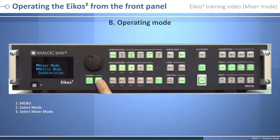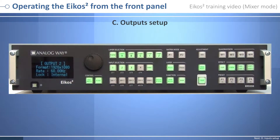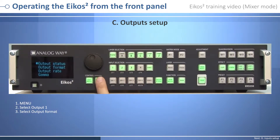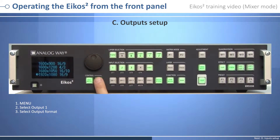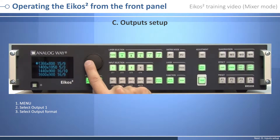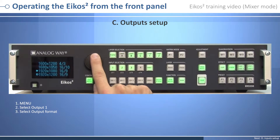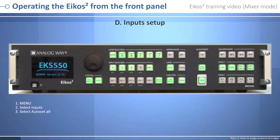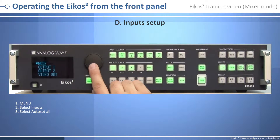Select Mixer and validate by pressing Enter. Output setup: to set up the output, press Exit Menu, select Output Number One program menu, press Enter, choose the adapted format and rate, then press Enter. For further details on settings, please refer to the user manual.